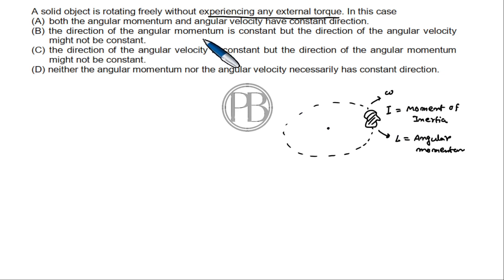The direction of the angular momentum is constant but the direction of the angular velocity might not be constant. On the other hand, the direction of the angular velocity is constant, the angular momentum might not be constant.